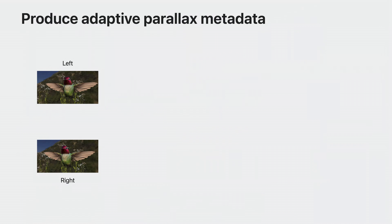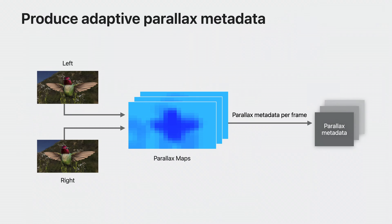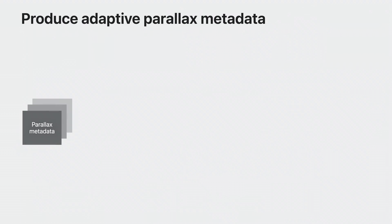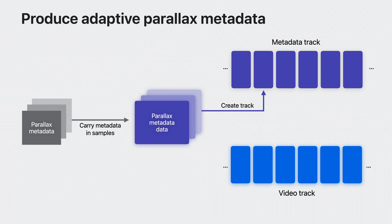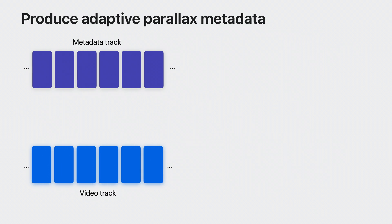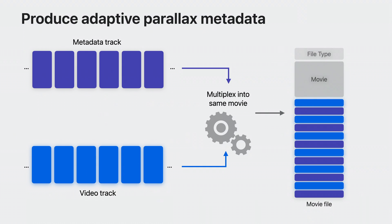Considering how this parallax metadata is produced: start with left and right views for each frame — this can be done in production with two synchronized video tracks and doesn't require MV-HEVC. Then perform parallax or disparity analysis to create parallax information suitable for describing the tiling. For each stereo frame, this is packaged in a metadata payload. A specification describing the format of this metadata is available with the SDK. This parallax information is packaged in metadata samples and written into a timed metadata track, associated with the corresponding video it describes. The metadata and video tracks should be multiplexed so that HLS packaging produces video segments with both the video and the parallax metadata.